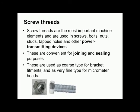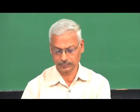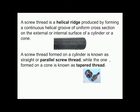Screw threads are the most important machine elements and are used in screws, bolts, nuts, tapped holes, and other power transmitting devices. They are very convenient for joining and sealing purposes. They are used as coarse type for bracket fitments and as very fine type for micrometer heads and precision moving mechanisms. A screw thread is basically a helical ridge produced by forming a continuous helical groove of uniform cross section on an external or internal surface of a cylinder or a cone.